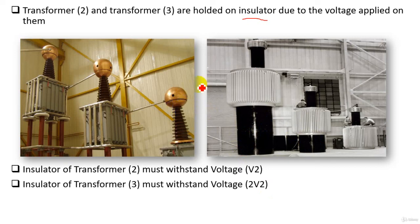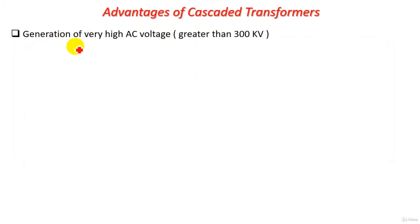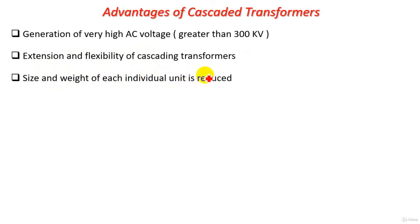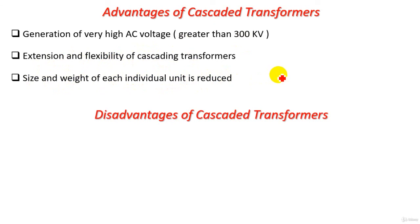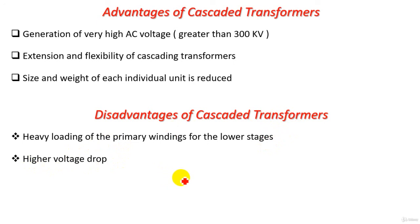Now let's see the advantages of using cascaded high voltage transformers. First, generation of very high AC voltage greater than 300 kilovolt. Second, extension and flexibility of cascaded transformers. Third, size and weight of each individual unit is reduced. However, the disadvantages include heavy loading of the primary windings for lower stages — the primary winding of transformer 1 is heavily loaded due to the series connection, resulting in higher voltage drop for the whole configuration. Therefore we cannot use many units, and the optimum number of units is 3.